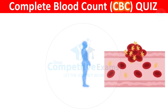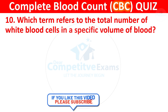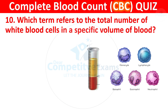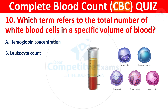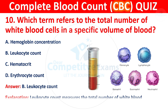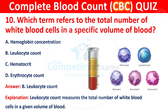The normal range for platelet count in adults is typically 1,50,000 to 4,50,000 platelets per cubic millimeter of blood. Question 10: Which term refers to the total number of white blood cells in a specific volume of blood? Your options are hemoglobin concentration, leukocyte count, hematocrit, or erythrocyte count. The correct answer is B, leukocyte count. Leukocyte count measures the total number of white blood cells in a given volume of blood.